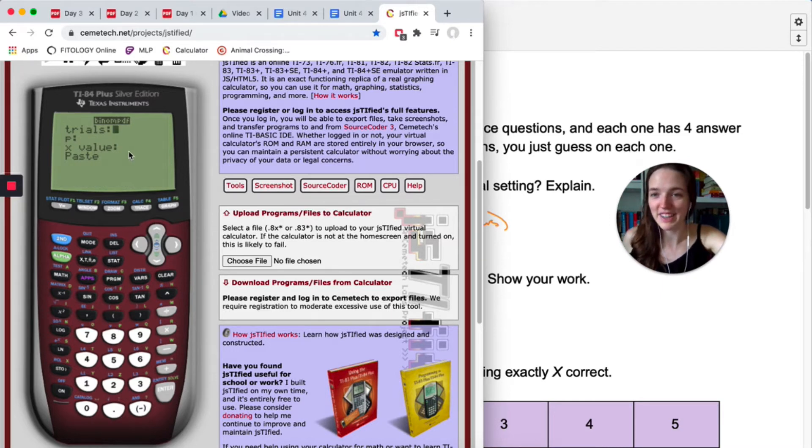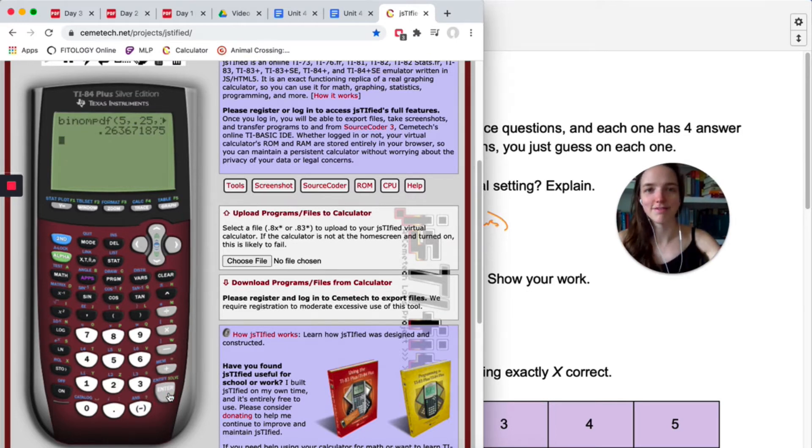And if you have a fancy calculator, it's going to say trials, p, and x value. So you're going to put in the number of trials, the probability of success, and the x value that you are interested in. Hit enter. That's it.